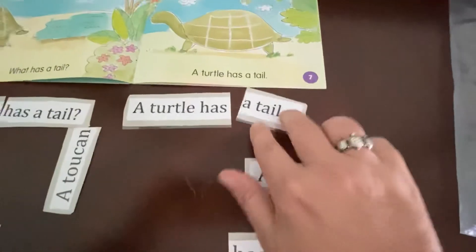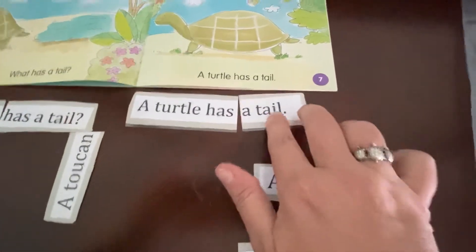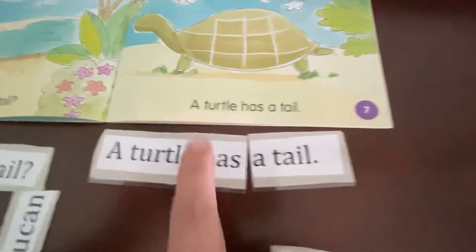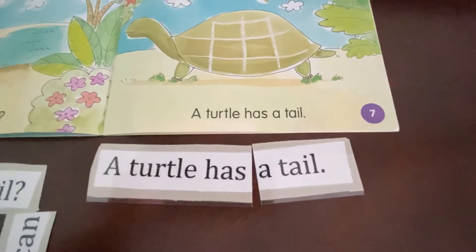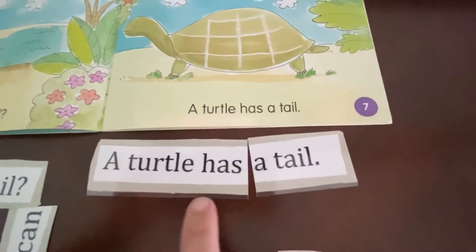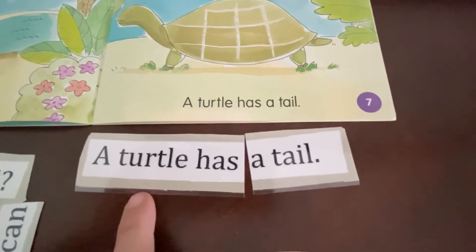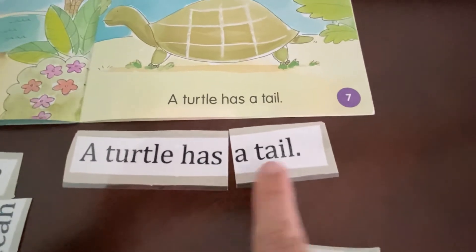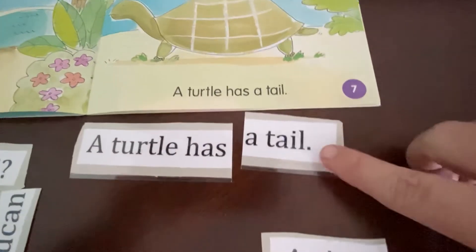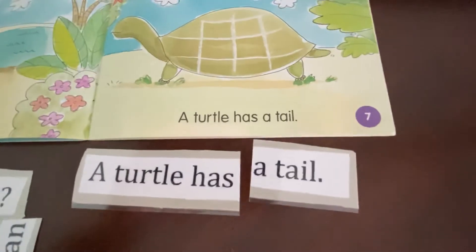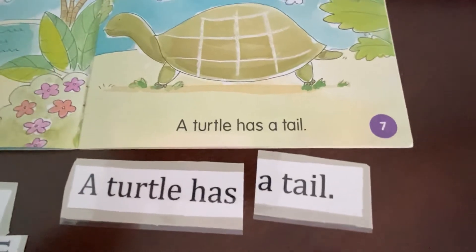I just need this one because we want to match up those words — one, two, three, four, five. One, two, three, four, five. That's better. A turtle has a tail. And you can help your child with it. That is a period at the end.